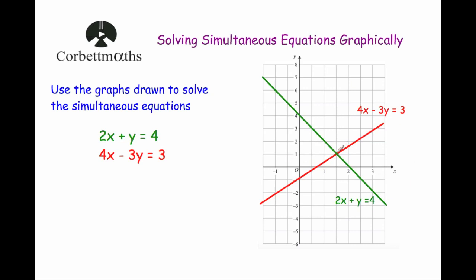As you can see, they clearly meet here at this point here. And that's the point 1.5 across and 1 up. So it's the coordinate 1.5, 1. So that means that obviously we do the x first along the corridor and the y is then going up. So we know that x equals 1.5 and y equals 1. And that's our solution.